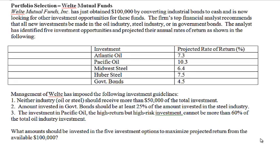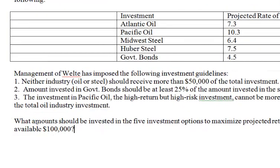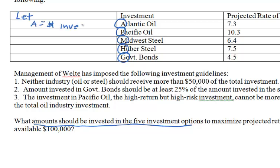Now let's formulate the linear programming model. First, the decision variables — what do we need to decide on? The amounts that should be invested in the five investment options, so we need five decision variables. Using first letters: let A be the dollar amount invested in Atlantic Oil, P for Pacific Oil, M, H, and G with similar definitions for the remaining investments.